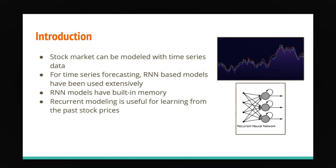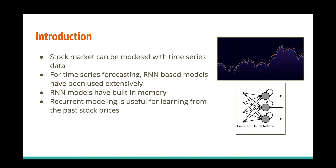A stock market is an aggregation of buyers and sellers of stocks. It has opening prices and closing prices, and it can be modeled as time series data where each time point has a value of the opening or closing price. Usually, stock market machine learning models use closing prices for modeling purposes, though there is no hard and fast rule. In my experiment, I used closing price for the stock price prediction model.